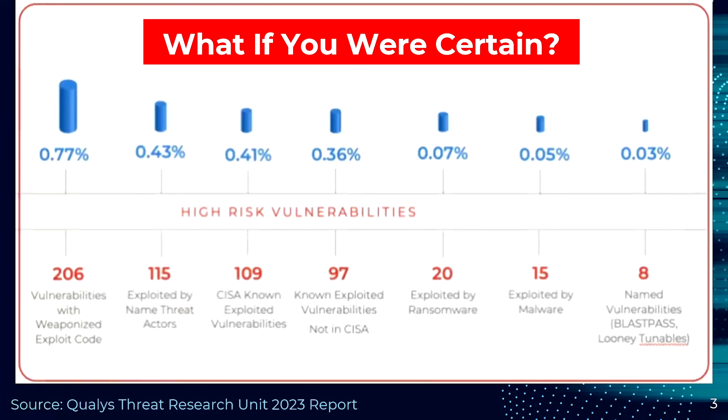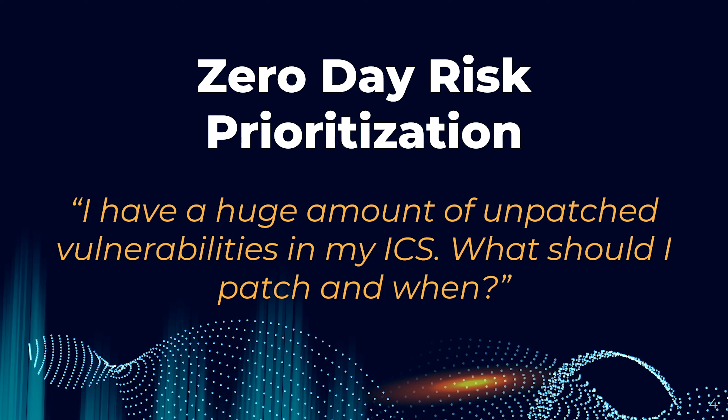If you look at this report, you'll see that there are known exploitations, or KEVs — the ones that are published — and the ones that are zero-days. That's what we're really going to focus on in this discussion. If you had a huge amount of unpatched vulnerabilities in your environment, how would you patch them and how would you put that into priority?